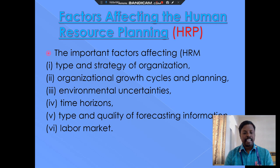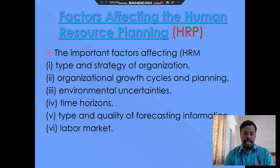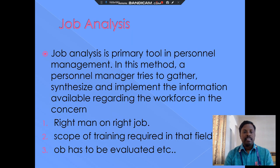The fifth factor is quality of forecasting and information. Forecasting information may change from time to time, and it is also one of the factors affecting human resource planning. The sixth major factor is the labor market, which changes from period to period and is a major factor affecting human resource planning.